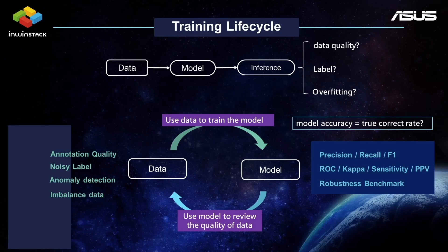Here's a simple way to explain the model training process — we may call it the training life cycle. After we gather labeled data, we start to train the model, and when the model is accurate enough, we will begin to use the model for inference. But when we use the model in clinical practice, the results will always affect each other based on the data quality and model behaviors.